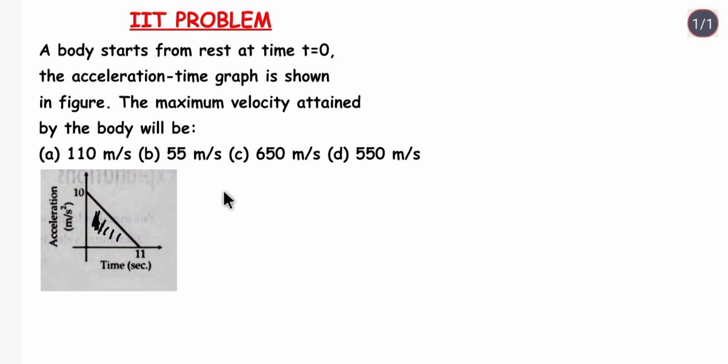So our change in velocity is equals to area under the acceleration time graph. And this is the right angle triangle. So we know the area of right angle triangle is half into base into height.